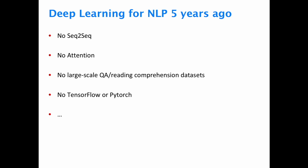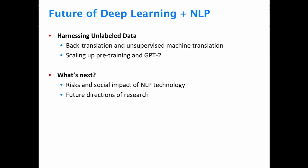Trying to forecast the future for deep learning is really difficult because the field is changing super quickly. As a reference point, let's look at what deep learning for NLP looked like about five years ago. A lot of ideas now considered core techniques didn't even exist back then — things like seq-to-seq, attention mechanisms, large-scale reading comprehension, and even frameworks like TensorFlow or PyTorch.